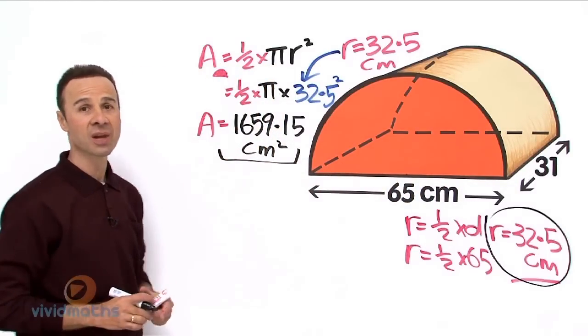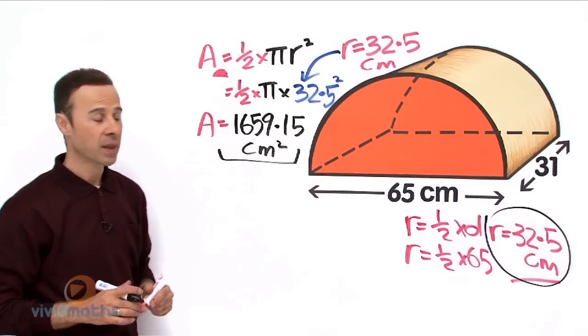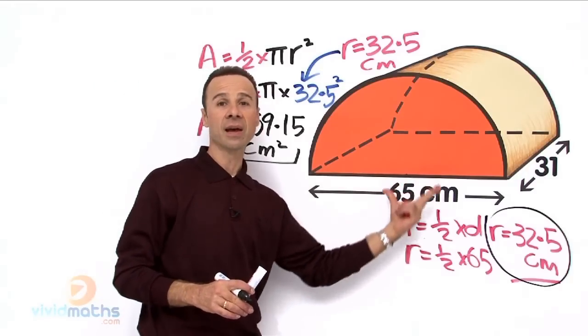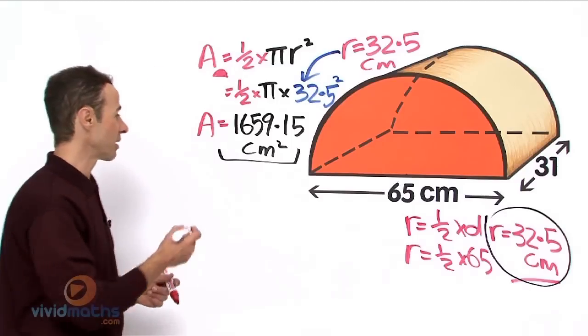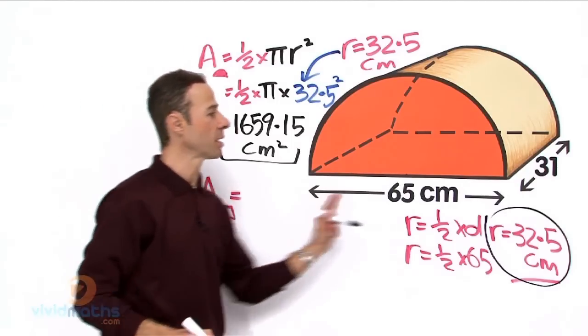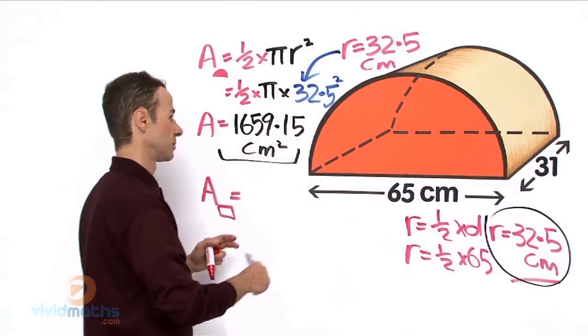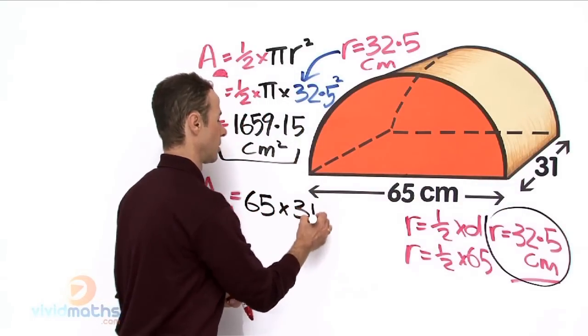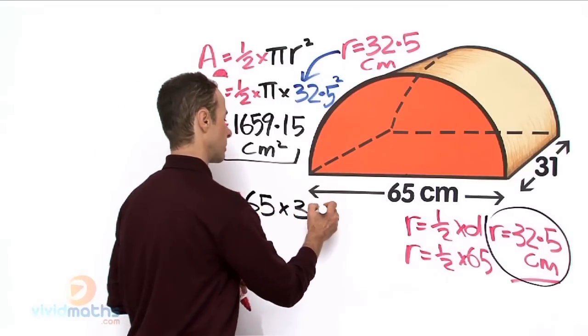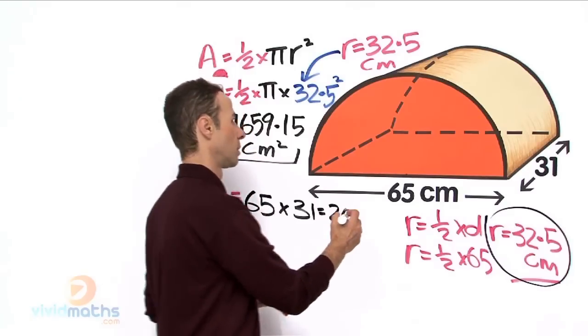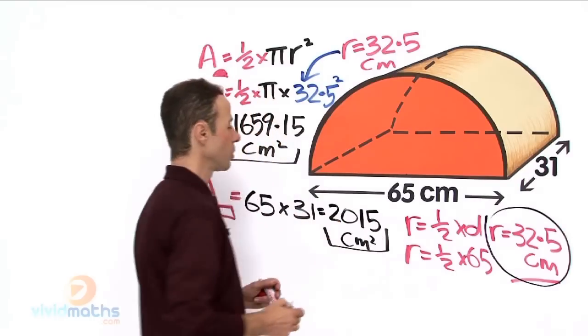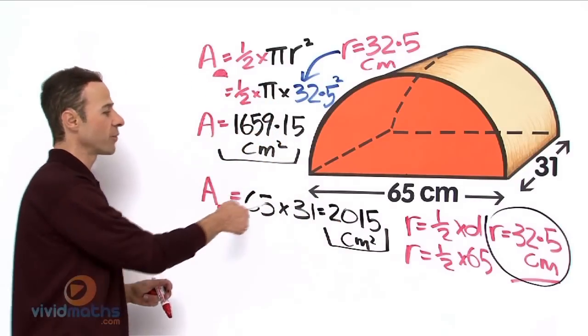So just remember there are two semicircles attached to this semicircular cylinder. Now let's go back over to step number 2 and that's to find the guts underneath the floor, the underneath part here which is a rectangle. Let's work that out – so that's going to be length times breadth, so 65 times 31 on your calculator is going to yield 2015 cm². There's our area for the rectangle underneath.